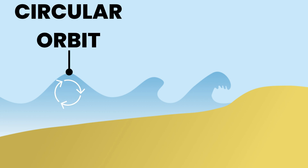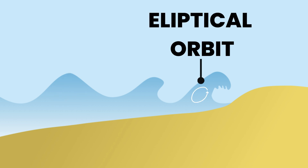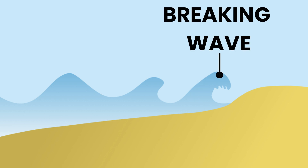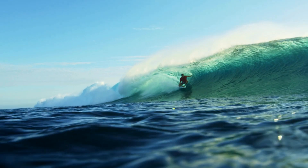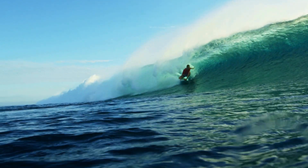As mentioned earlier, water molecules within a wave move in a circular motion in deep water. However, as the wave approaches the shore, frictional drag slows the lower part of the wave, causing the molecules to move in an elliptical motion. As the base of the wave is slowed down, the upper part travels faster, causing the wave to tilt and break as it moves towards the shore in the surf zone.